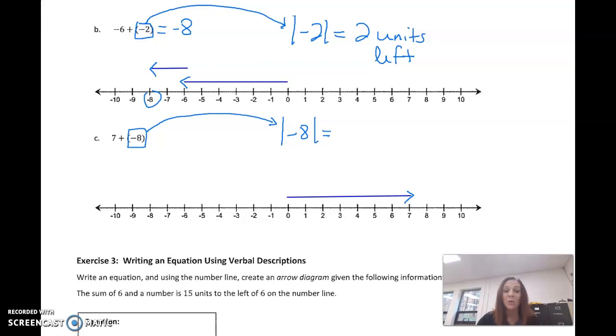It means we go eight units, because that's the absolute value, so we're traveling eight units. And since it's negative, we're going eight units left. So from the seven here, one, two, three, four, five, six, seven, eight, and we end up being at negative one.